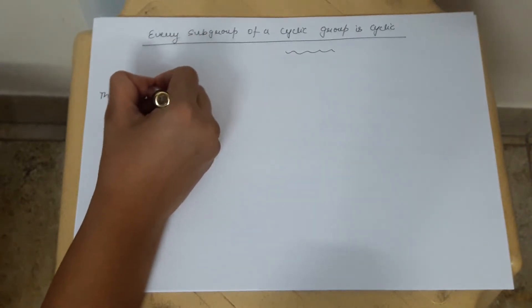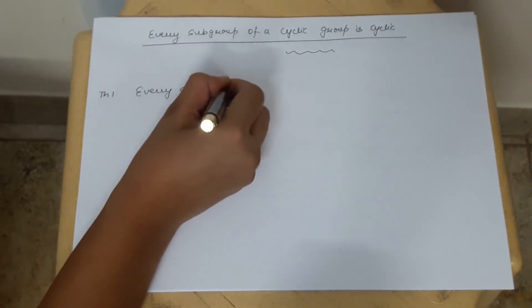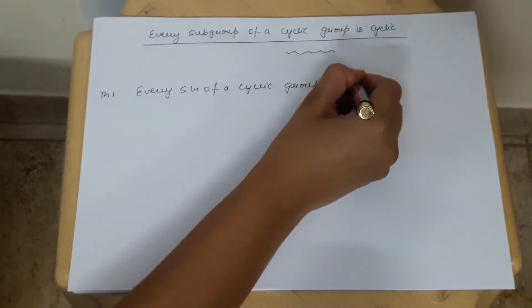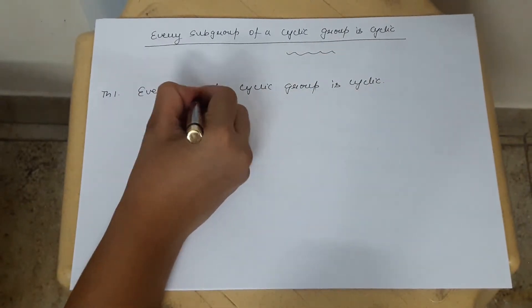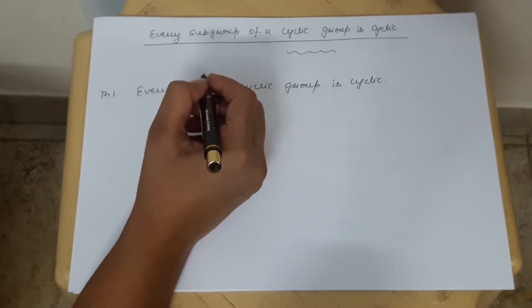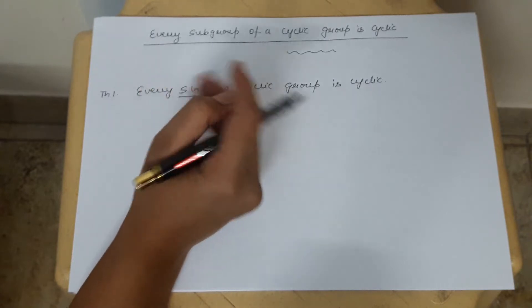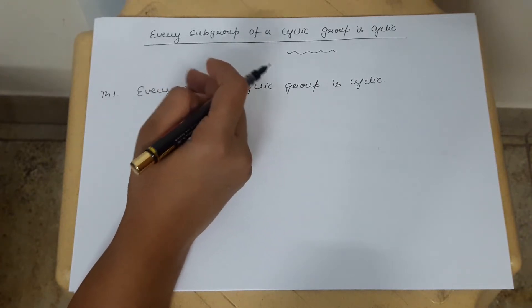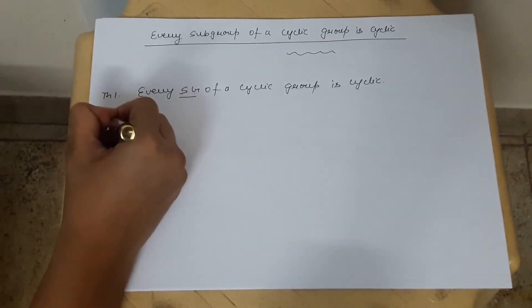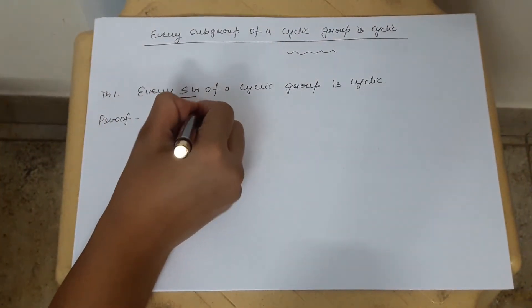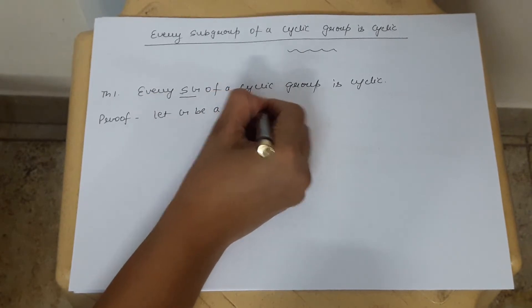The theorem statement is: every subgroup of a cyclic group is cyclic. I have used the abbreviation 'SG' instead of writing 'subgroup' in full. This is not a standard notation — I keep telling you that SG is not standard. I am using it for my own convenience, to avoid writing 'subgroup' again and again.